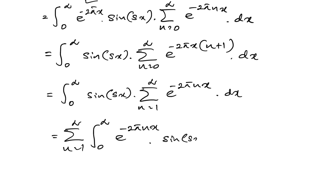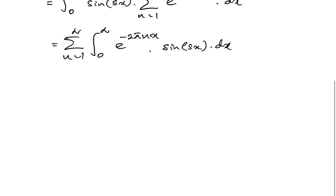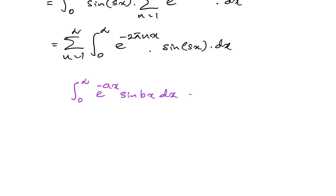Let's recall the well-known integral: the integral from 0 to infinity of e^(−ax) times sine(bx) dx, where a > 0. The answer is b over (a² + b²). We now have exactly this type of integral.